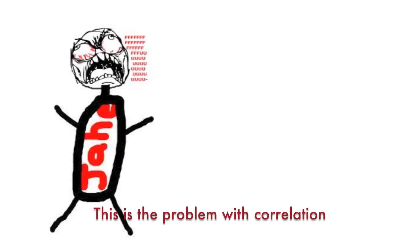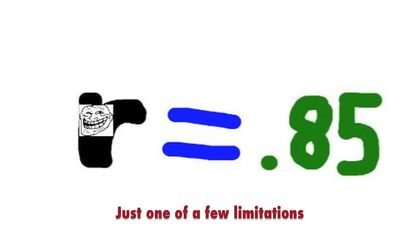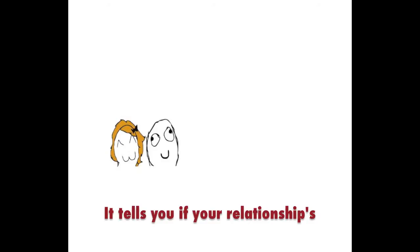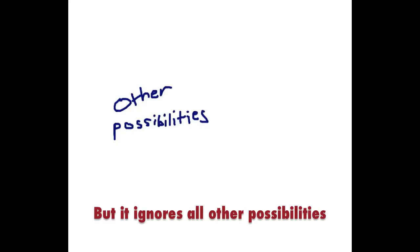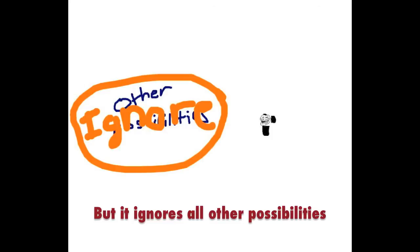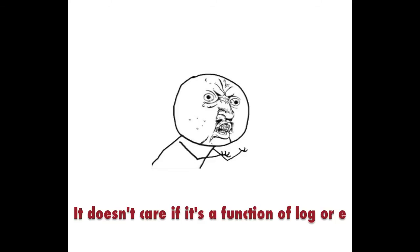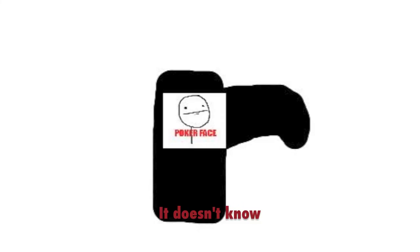This is the problem with correlation, just one of a few limitations. It tells you if your relationship's strong or weak, but it ignores all other possibilities. It doesn't care if it's a function of logarithm. It doesn't know.